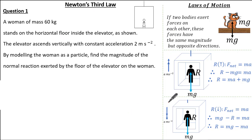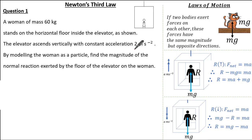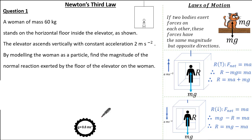Now that we've recapped Newton's third law, let's look at a past exam question. A woman of mass 60 kg stands on the horizontal floor inside an elevator. The elevator ascends vertically with a constant acceleration of 2 m/s². By modelling the woman as a particle, find the magnitude of the normal reaction exerted by the floor of the elevator onto the woman. In this question g is taken as 9.8 m/s² — do check what value your exam board requires.